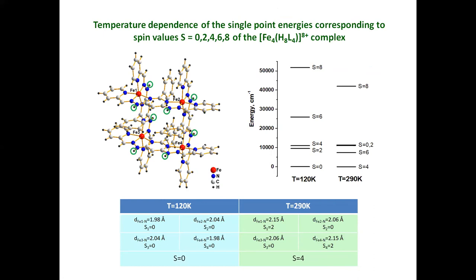Next is the temperature dependence of the single-point energies corresponding to spin values zero, two, four, six, and eight for the tetranuclear cluster. We also used crystallographic data in our calculations and investigated the energies of the fully protonated tetranuclear complex at low and high temperatures. When the complex is fully protonated with eight protons, at low temperatures the ground state has spin equal to zero — all centers are magnetically silent — and at high temperature the spin of the complex equals four, showing that two of the ferrum ions undergo spin crossover transformation.